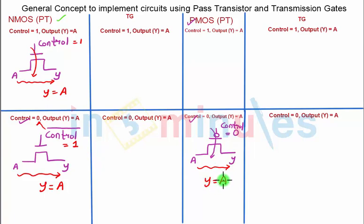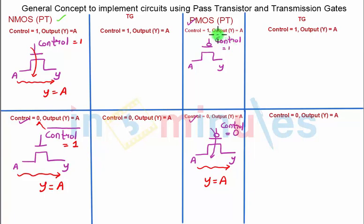We got output equal to A when control was equal to 0. Now, using the same PMOS transistor, we want output equal to A when control is equal to 1. If we give this gate the control signal directly, when control is 1 the transistor would be off. So we give its gate terminal control bar instead. If control is 1 then control bar is 0, and with 0 at the gate the PMOS transistor turns on, so A goes to the output and Y equals A.